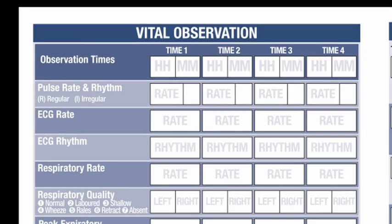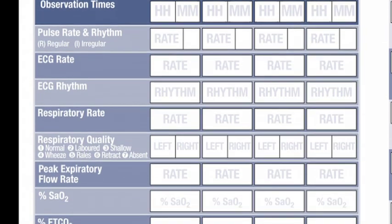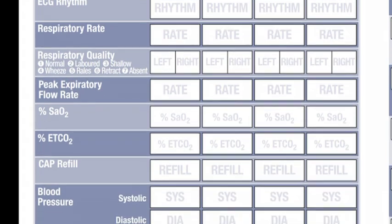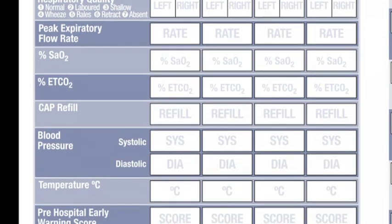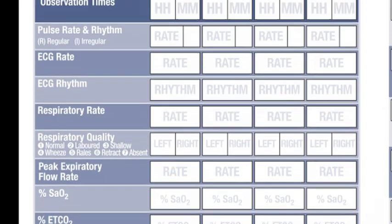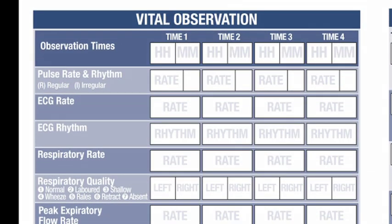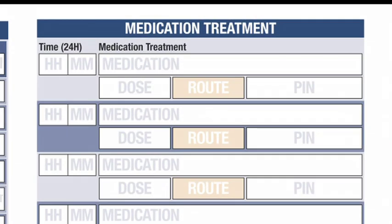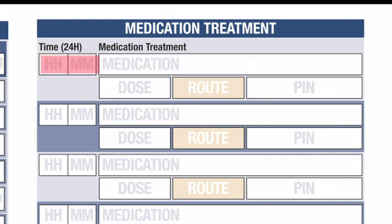Vital observations. There are four columns on which to enter patient observations and if there is a requirement to record a further set, this should be recorded in additional information. Enter observations as appropriate and record the time completed. Medication treatment: record the name of the medication administered, time given, dose, route and the PIN of the practitioner.